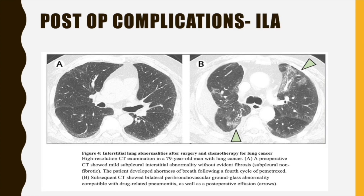A clinical example is provided of a lung cancer patient whose pre-op CT showed only mild subpleural interstitial abnormality without fibrosis. After receiving a cycle of chemotherapy with pemetrexed, the patient developed drug-induced pneumonitis compatible with drug-induced lung injury, also developed an effusion, and the patient worsened. This illustrates how a pre-existing ILA can be a significant risk factor for complications during treatment.